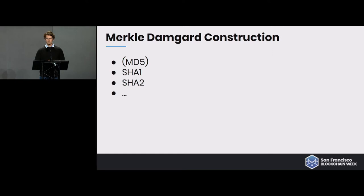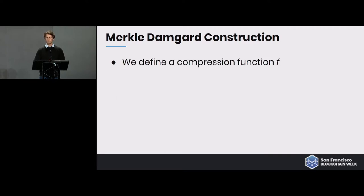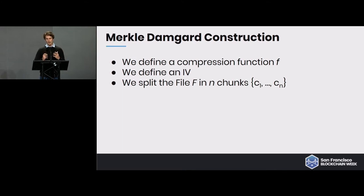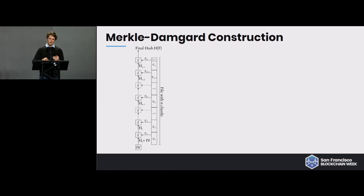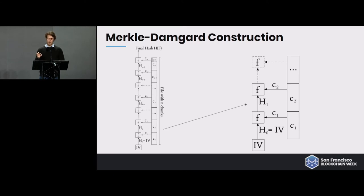The Merkle-Damgård construction is what is used for MD5, SHA-1, and SHA-2 — the most frequent ones. You define a compression function F, an initialization vector IV, and split the file F into n chunks from c1 to cn. On the right you see the file split into chunks c1, c2, ... ck, cn-1, cn, and on the left the compression function F which takes a file chunk and the previous state.